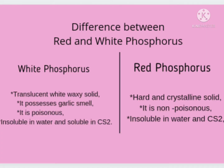Differences between red and white phosphorus. White phosphorus is a translucent white waxy solid with a garlic smell and is poisonous. It is soluble in carbon disulfide and insoluble in water. Whereas red phosphorus is a hard crystalline solid, odorless, non-poisonous, and insoluble in both water and carbon disulfide.